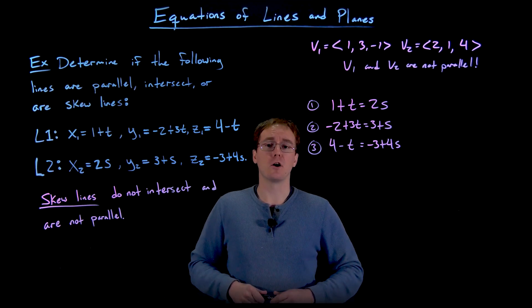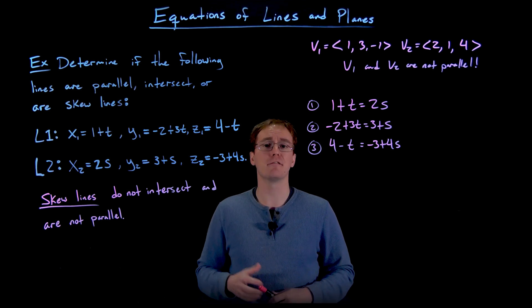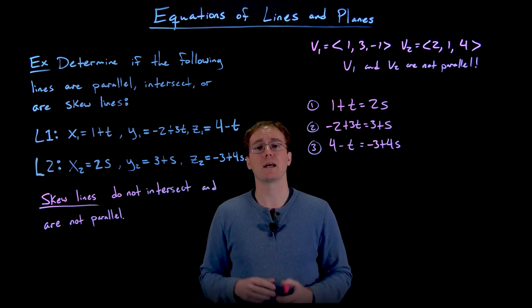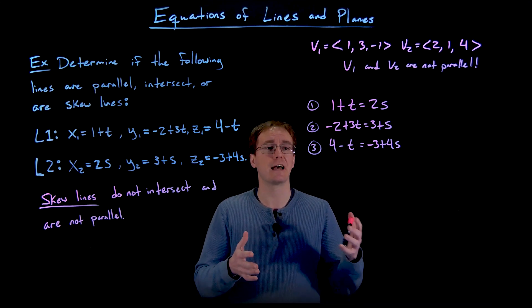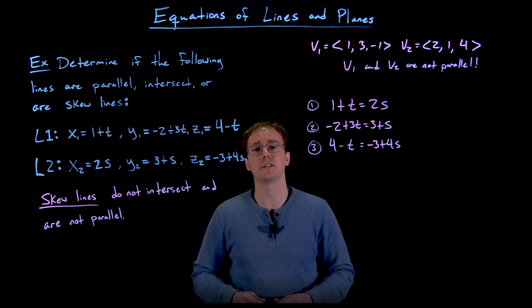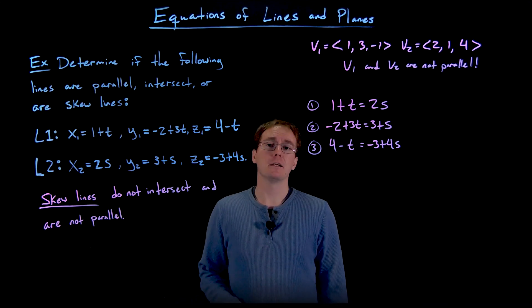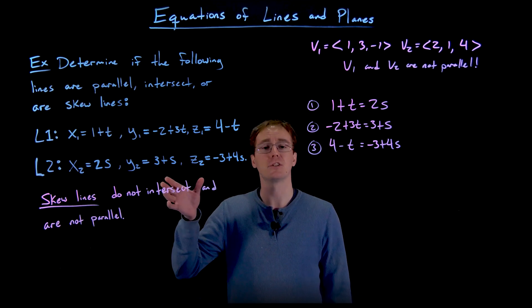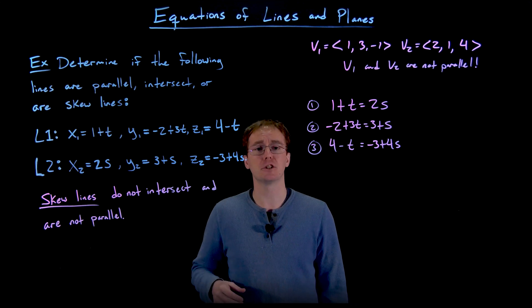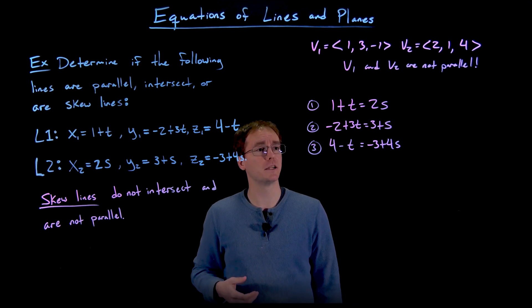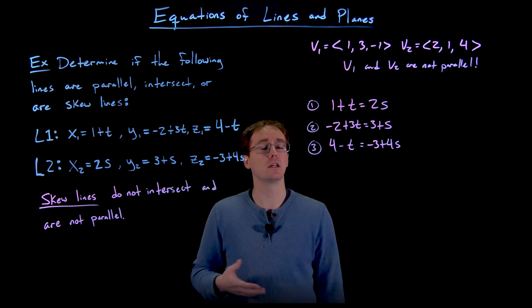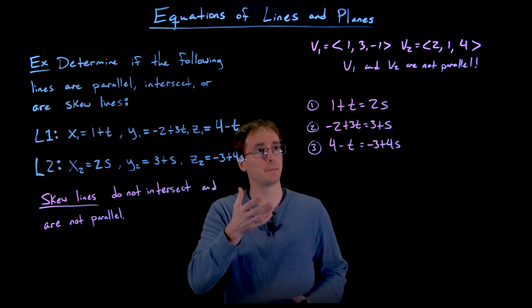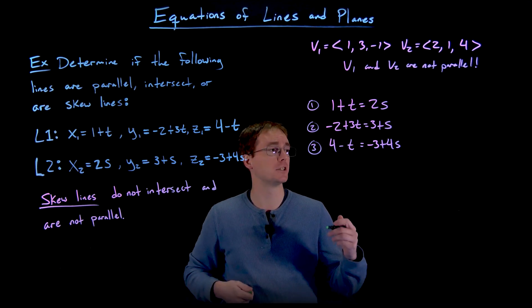This is an overdetermined system, so we solve it using only two equations and then check the solution in the third unused equation. I recommend the elimination method. Adding equation 1 and equation 3 together eliminates t, since t + (−t) = 0.